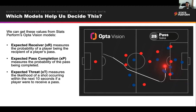Then we've got expected pass completion — a model many of you may have seen before — which measures the probability of the pass being completed. If there are loads of players in the way, or it's a longer pass, or other contextual factors, you're less likely to complete it. And finally, a measure of threat: expected threat measures the likelihood of a shot occurring within the next 10 seconds if a player were to receive the pass.